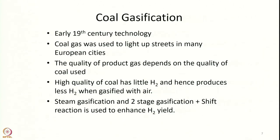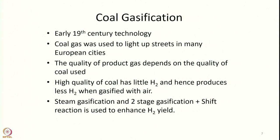Most of the hydrogen has been lost during coal formation. Now looking into coal gasification — the overall chemistry is similar to what we have seen in biomass gasification. It is an early 19th century technology; coal gas was used to light up the streets in many European cities. That coal gas is nothing but carbon monoxide plus hydrogen — used for street lighting in the 19th century. Interesting, isn't it — a gas carrying carbon monoxide used for street lighting.